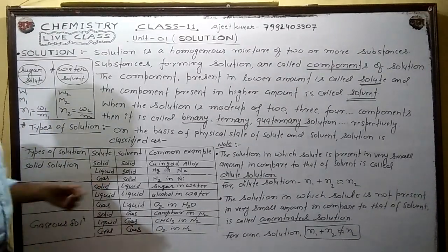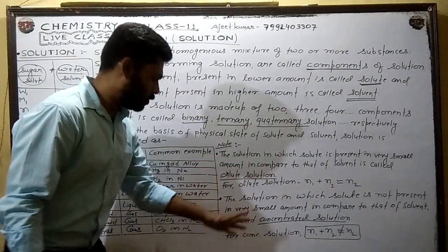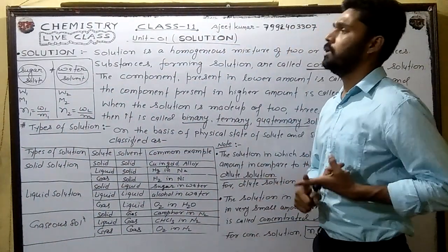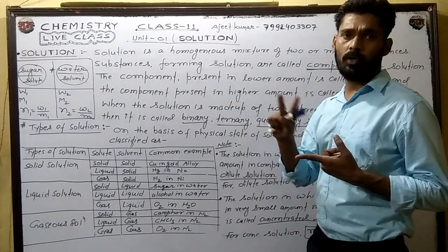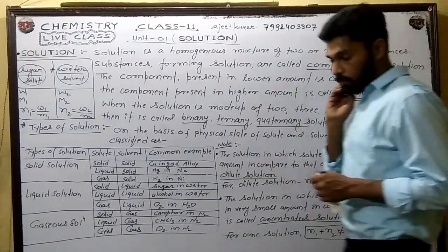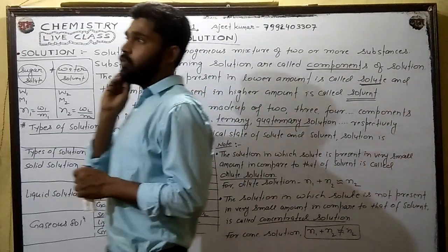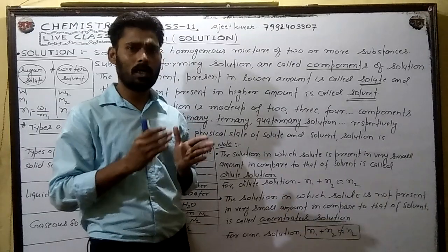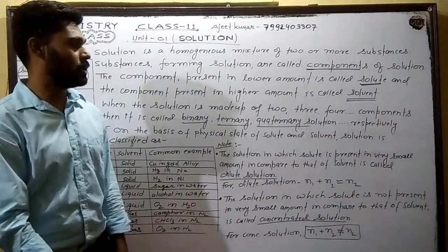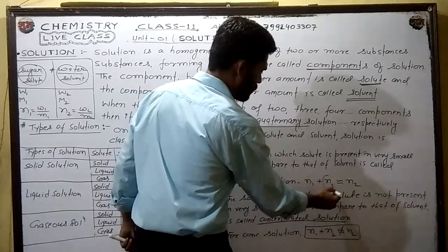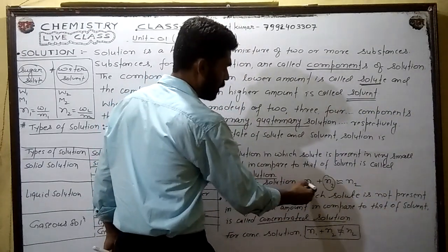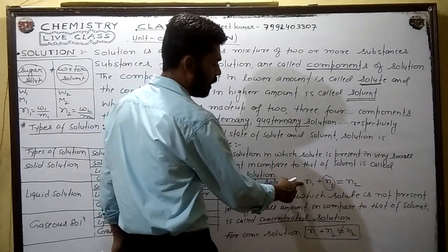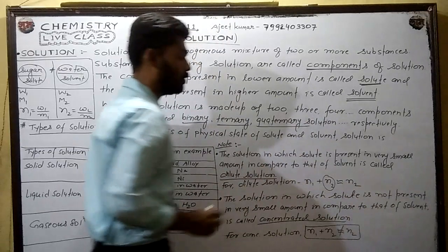There are two important types: dilute solution and concentrated solution. A dilute solution is one in which the solute is present in a very low amount. When solvent moles are very large compared to solute moles, that means n1 plus n2 is almost equal to n2.